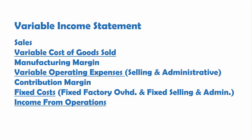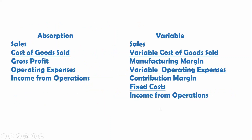Looking at them side by side, your sales numbers will be the same either way. You have cost of goods sold here, and variable cost of goods sold here. You have manufacturing margin, variable operating expenses, contribution margin, and fixed costs, where under absorption you just have your operating expenses to get to your income from operations.